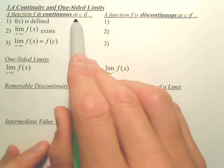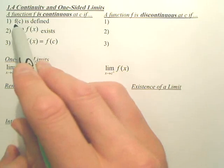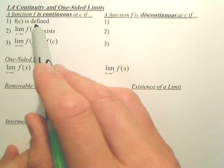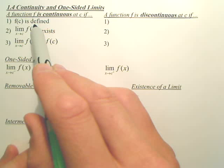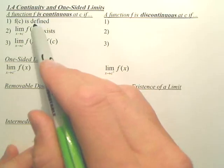A function is continuous at C if f of C is defined, meaning if you plug in C, you get an output. Obvious.